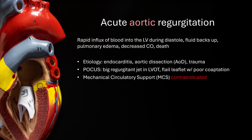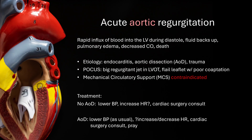For aortic regurgitation specifically, blood flows back into the LV during diastole, fluid backs up causing pulmonary edema, decreased cardiac output, and death. The major etiologies are endocarditis, aortic dissection, or trauma. With POCUS, you'll see a big regurgitant jet in the LVOT and a flail leaflet with poor coaptation of the aortic valve. Note that mechanical circulatory support is contraindicated because you need a competent aortic valve. Treatment is to lower blood pressure, increase heart rate, and consult cardiac surgery if there's no aortic dissection. If there is a dissection, you'll still lower the blood pressure, but the heart rate target becomes tricky — you'd normally increase it for AR but want to decrease it for dissection, so prayers are often helpful here.